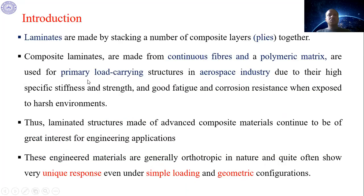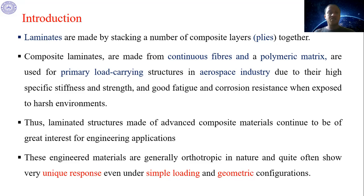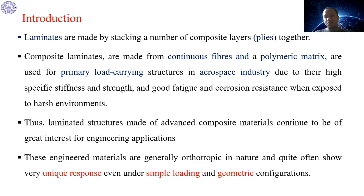These composites are prepared in laminate form, and laminates are prepared by stacking a number of composite layers together. Composite laminates are made from continuous fiber and polymer matrix and are used for primary load-carrying structures in the aerospace industry due to their high stiffness, strength, and fatigue and corrosion resistance under harsh environmental conditions. Such laminate structures made of advanced composite materials continue to be of great interest for engineering applications.